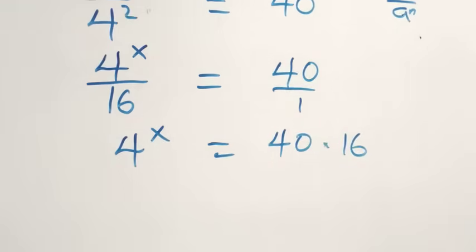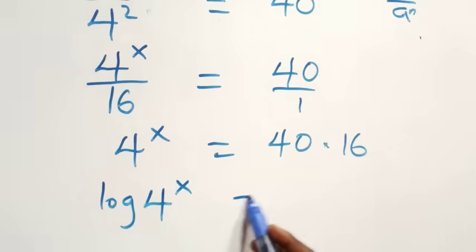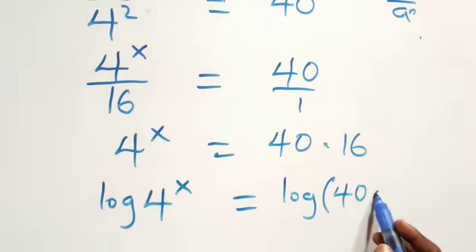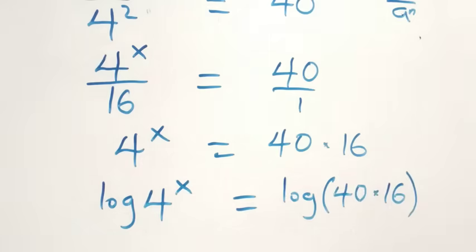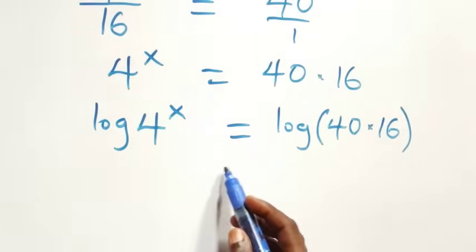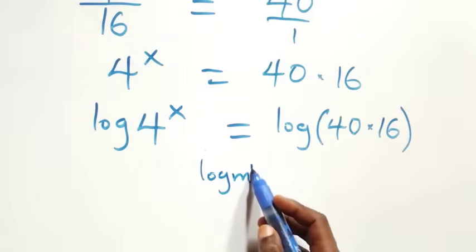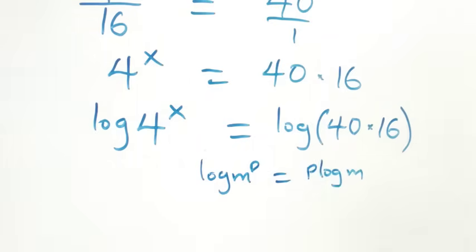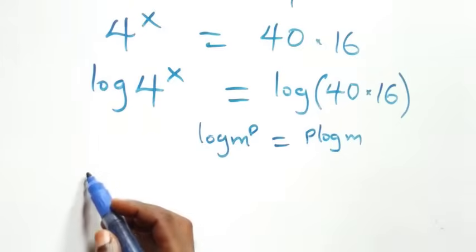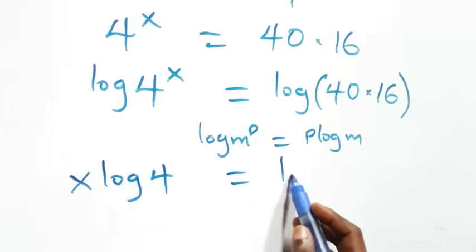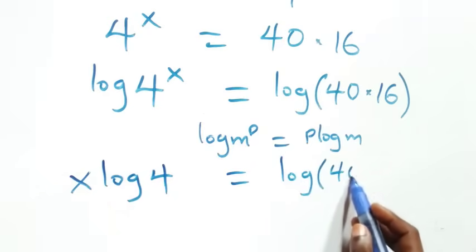Then here we take the log on both sides, so we have log of 4 raised to power x equals log of 40 times 16. We apply the power rule of logarithms: log m raised to power p is the same thing as p log m. So what we have becomes x log 4 equals log of 40 times 16.